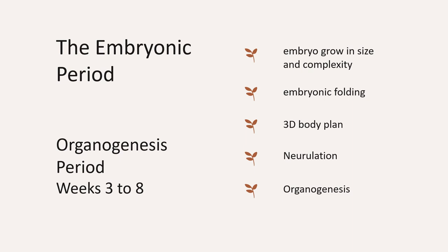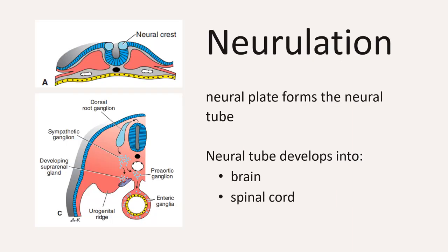Neurulation is also an important event, as well as the formation of the main organs during organogenesis. Neurulation is a process whereby the neural plate forms the neural tube. Once the neural tube is complete, the central nervous system is represented by a closed tubular structure where the narrow caudal portion develops into the spinal cord, and the much broader cephalic portion will develop into the brain vesicles, eventually forming the brain.